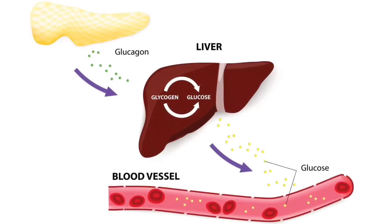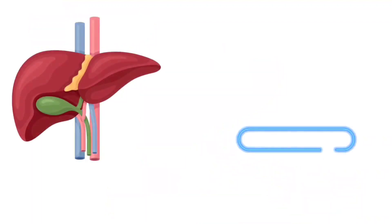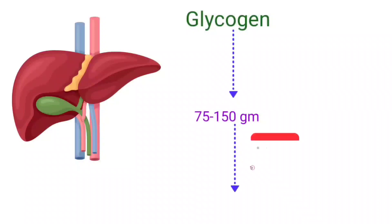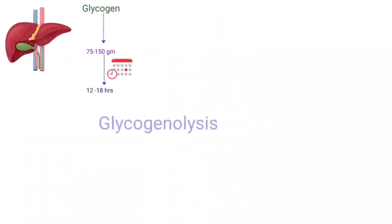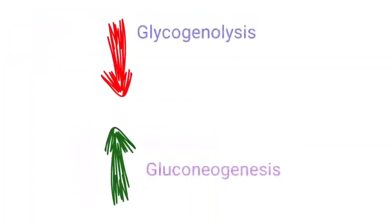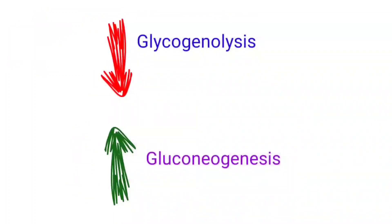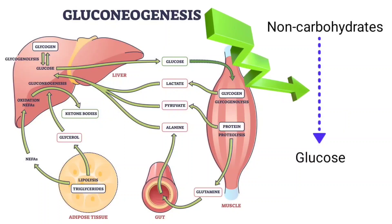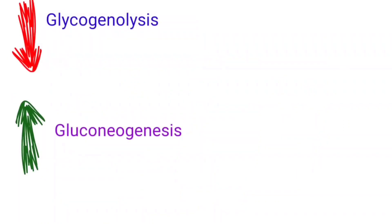Because of this, the body must find ways to maintain glucose levels. It activates hepatic glycogenolysis to release glucose stored in the liver as glycogen. However, liver glycogen is only about 75 to 150 grams, which supplies glucose for only about 12 to 18 hours. As glycogen depletes, gluconeogenesis is activated — the mechanism that produces glucose using non-carbohydrate precursors. As glycogenolysis decreases, gluconeogenesis gradually increases to provide glucose.